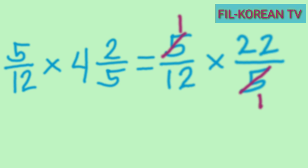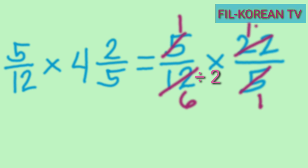Next, we apply cancellation to the denominator of the multiplicand and the numerator of the multiplier. Their GCF is two, so twelve divided by two equals six, and twenty-two divided by two equals eleven. We are done using the cancellation method, so the fractions are now smaller and easier to multiply.